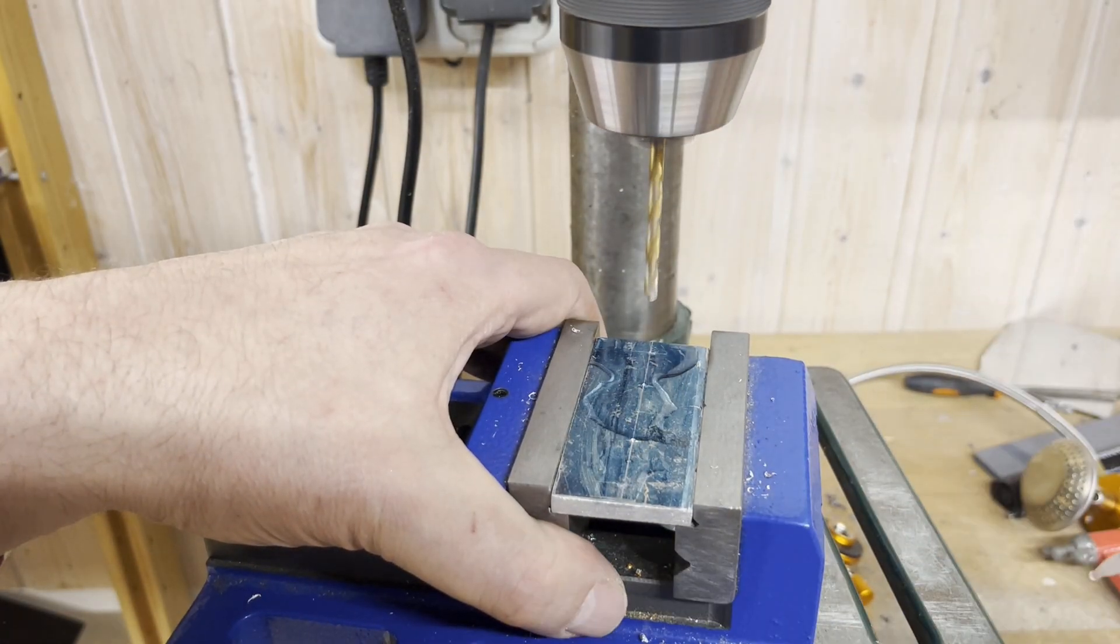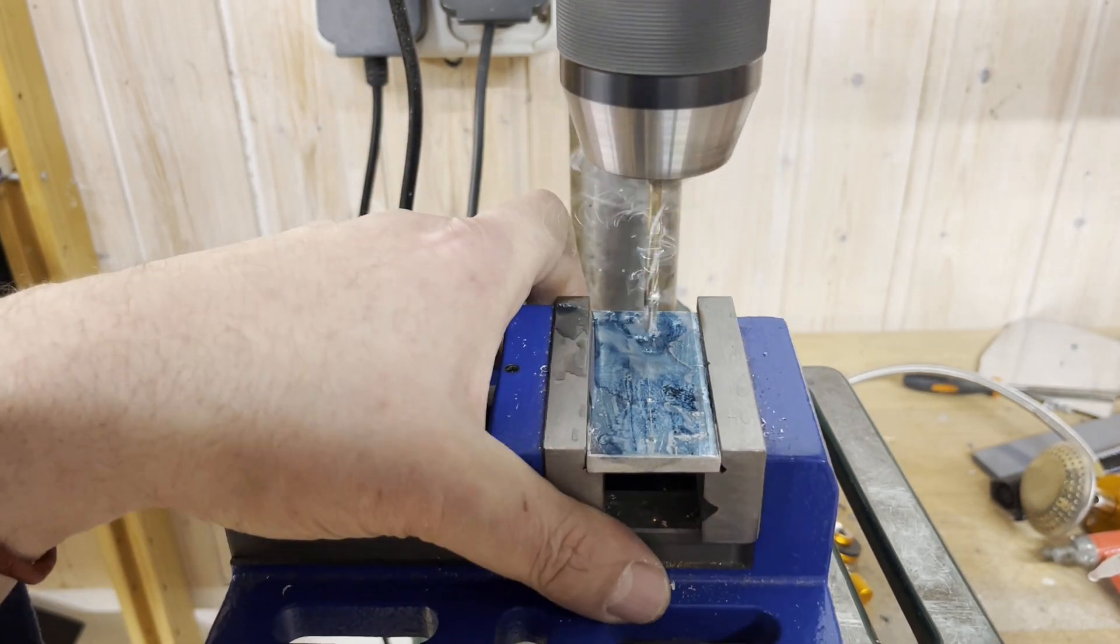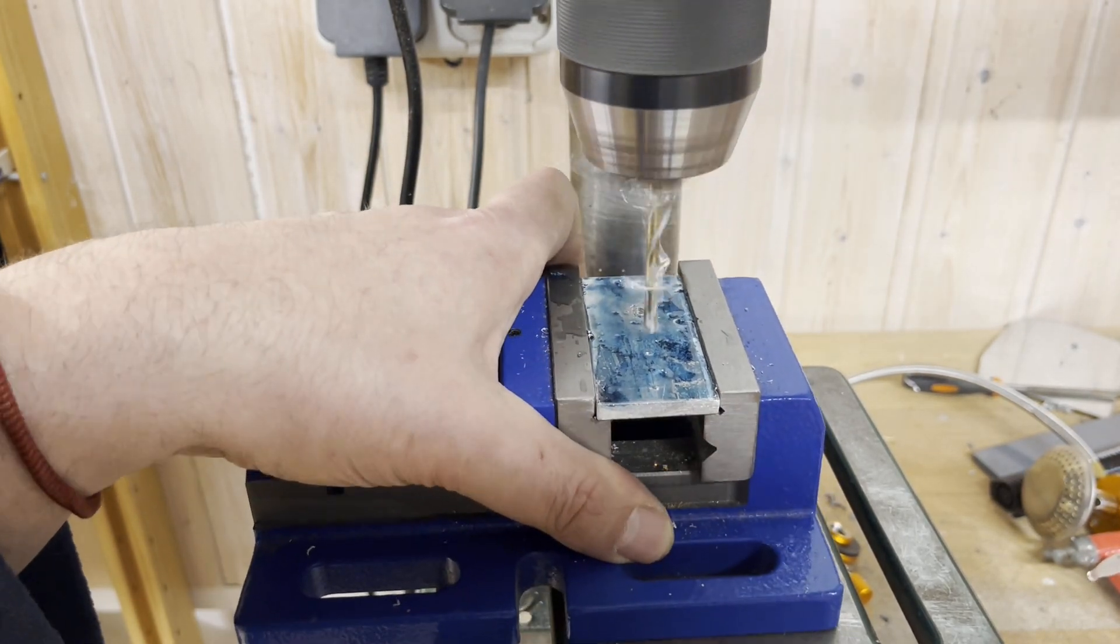Just a tip: when drilling aluminum, isopropanol is particularly suitable as a lubricant.